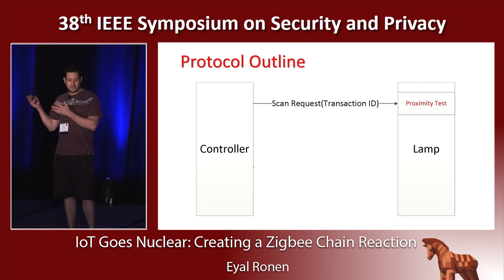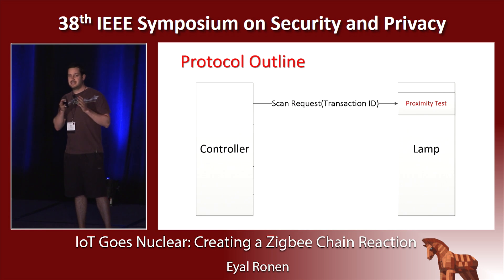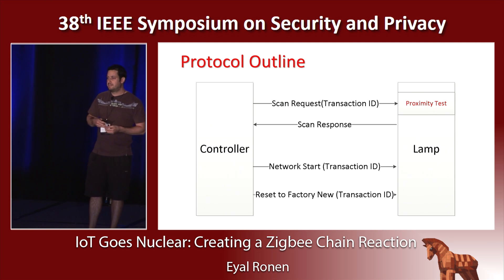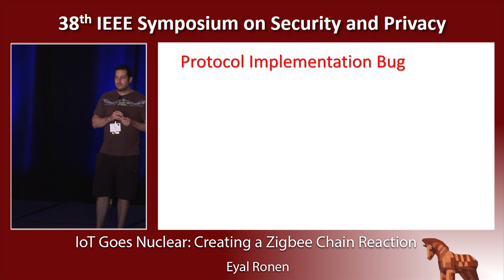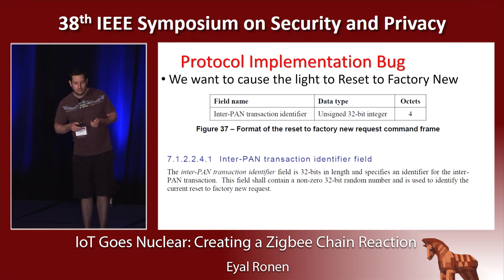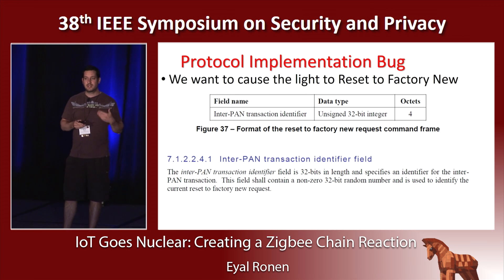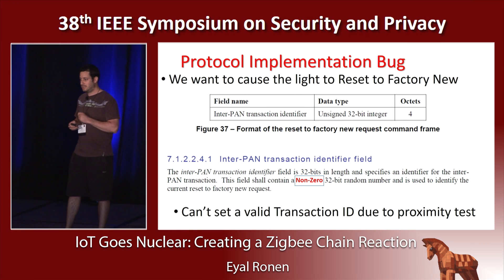Looking at the protocol outline: the controller sends a scan request including a randomly generated transaction ID that identifies the session. The lamp does the proximity test, and if it passes, it answers with a scan response. After that, the controller can send different kinds of messages to make the lamp join the network or to reset it to factory new. We needed to find a way to overcome this proximity test to perform the attack from long range. We looked at the specification of the reset-to-factory-new message and saw that this message contains only one 32-bit random number — the transaction ID.